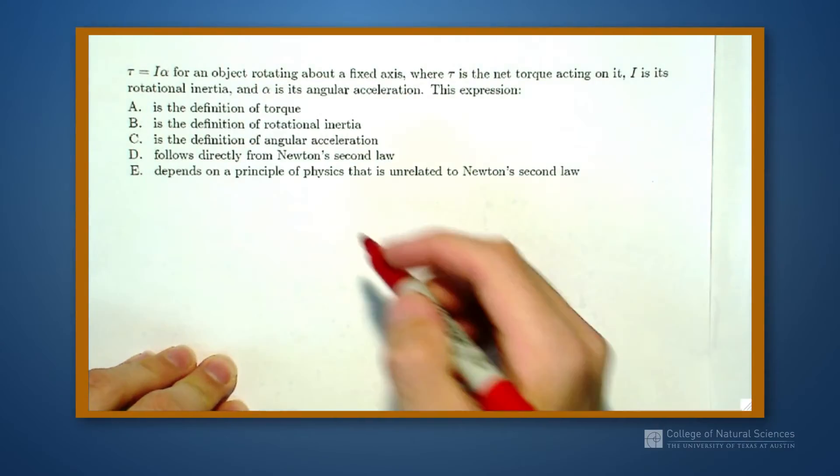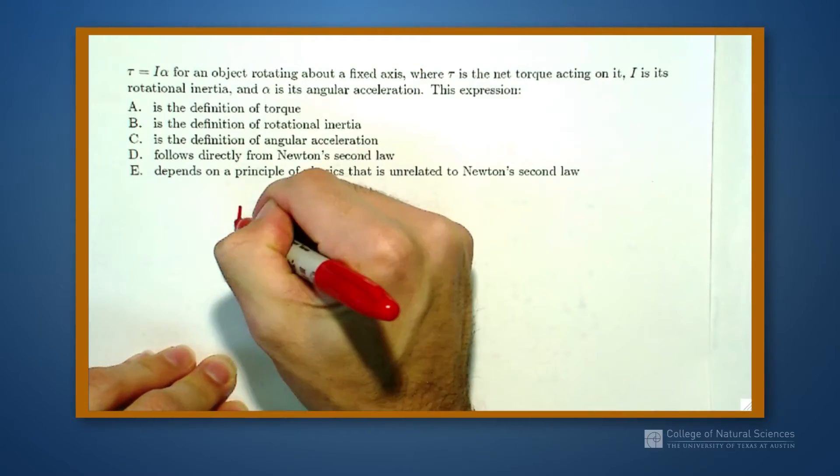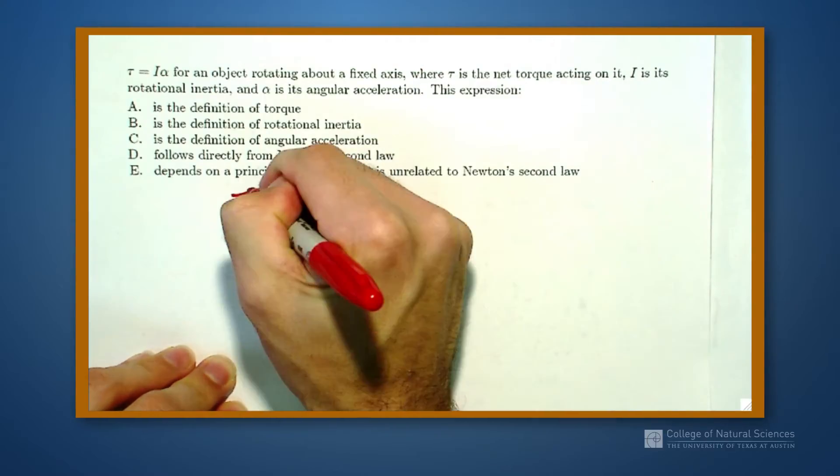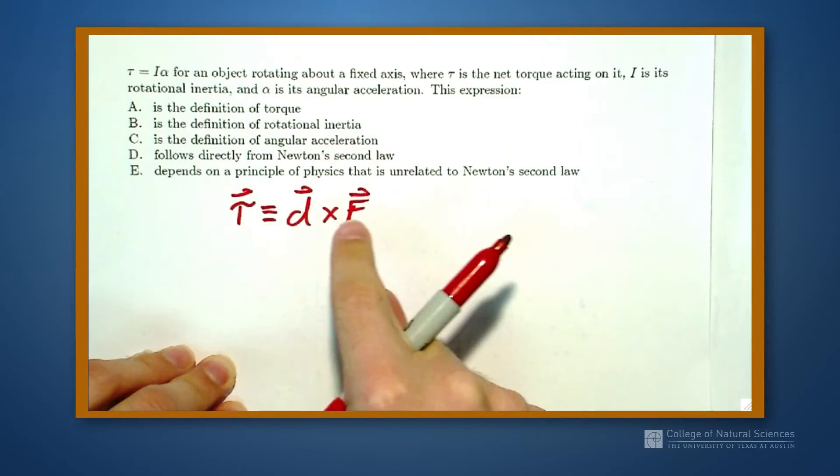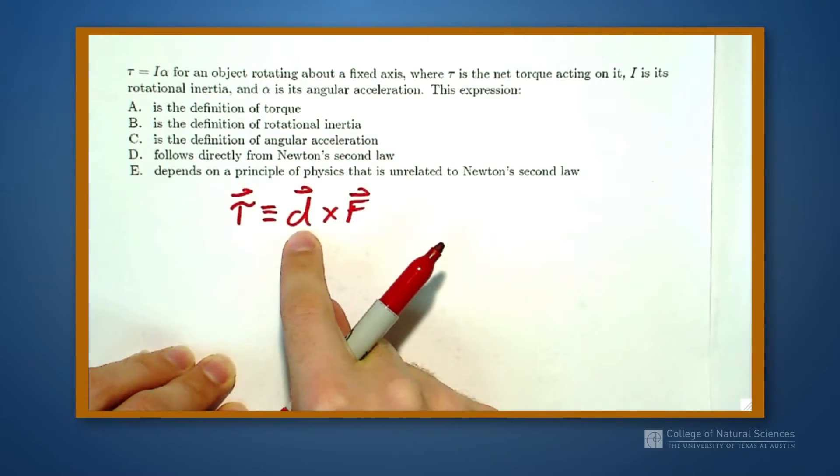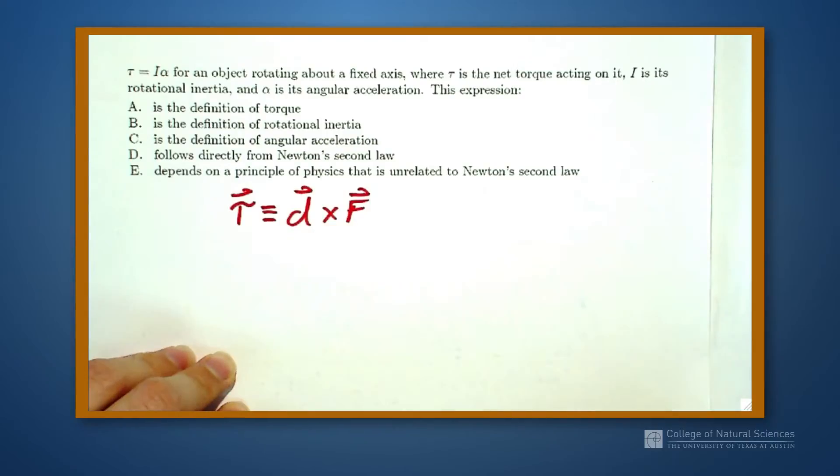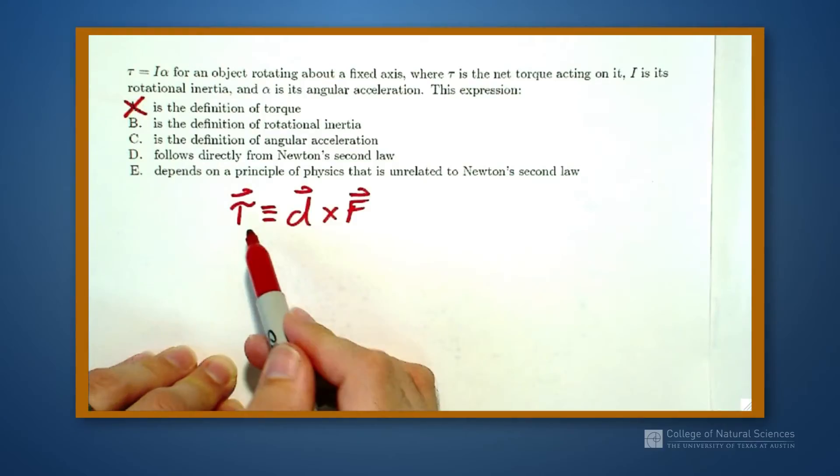Definition of torque. Well, the definition of torque is equal to d cross F. How do we get a torque? We have a force at a distance. We multiply the two using a cross product. So A, as I have it defined, is wrong because the definition of torque is something different.